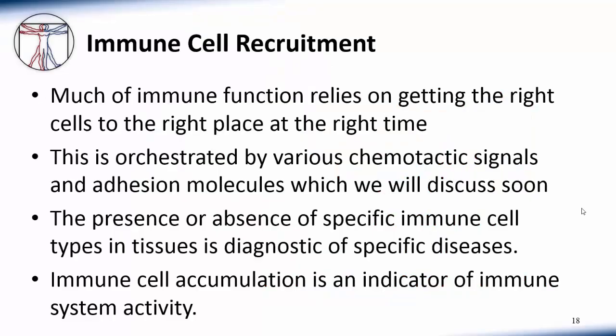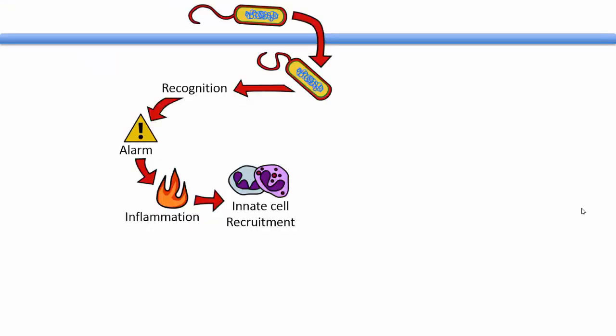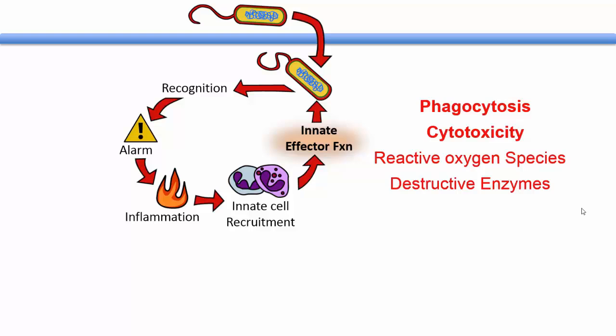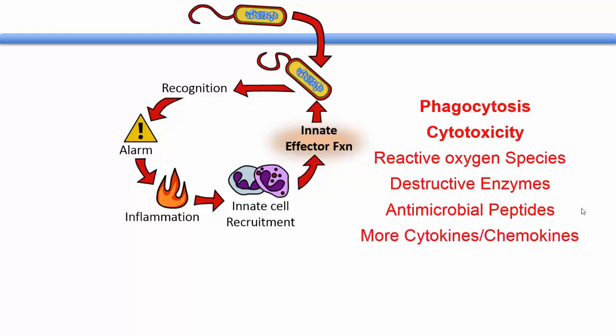Much of immune function relies on getting the right cells to the right place at the right time. This is orchestrated by various chemotactic signals and adhesion molecules. The presence or absence of specific immune cell types in tissues can be diagnostic for specific diseases, and immune cell accumulation is also an indicator of immune system activity. Once innate immune cells enter inflamed tissues, they perform a number of effector functions, including phagocytosis — essentially eating pathogens — and cytotoxicity, or killing pathogens in infected cells. They do this by producing reactive oxygen species, various destructive enzymes, antimicrobial peptides, and additional cytokines and chemokines, which further stimulate inflammation.